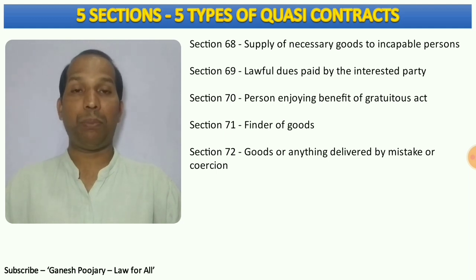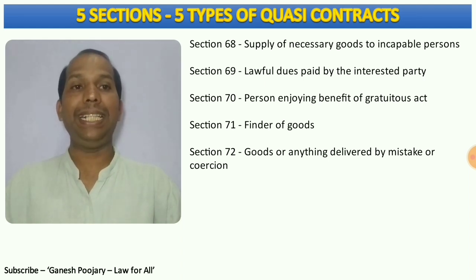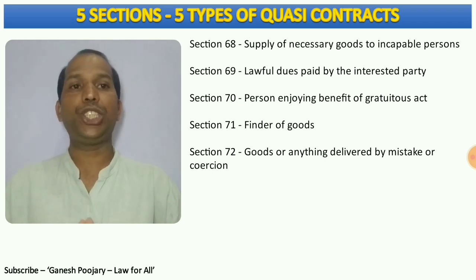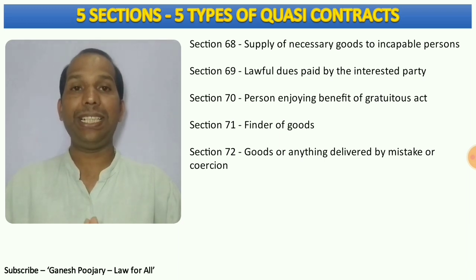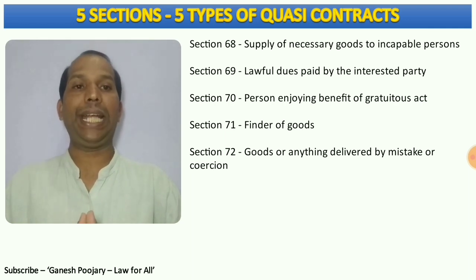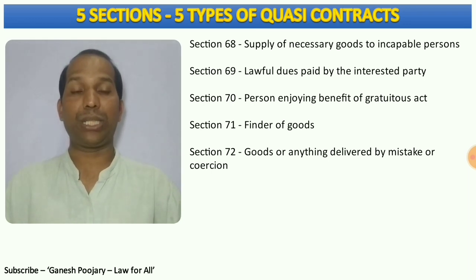Section 68 discusses supply of necessary goods to incapable persons. Section 69 discusses lawful dues paid by the interested party. Section 70 discusses a person enjoying the benefit of a non-gratuitous act. Section 71 discusses finder of goods, and finally section 72 discusses goods or anything delivered by mistake or coercion. Now let's learn each one with illustrations and case laws.